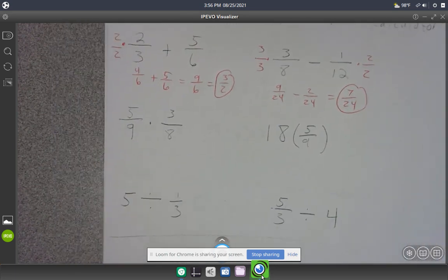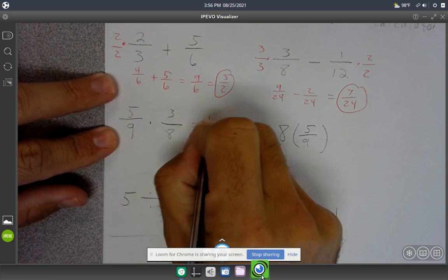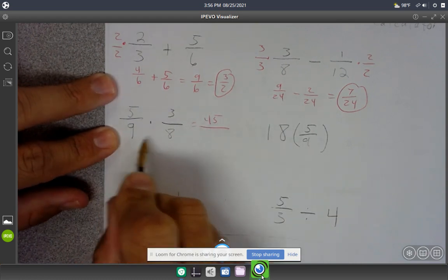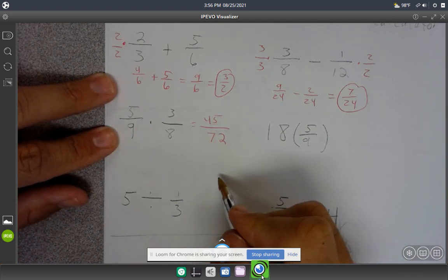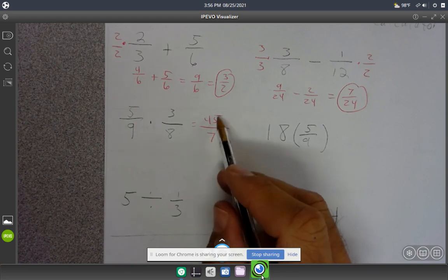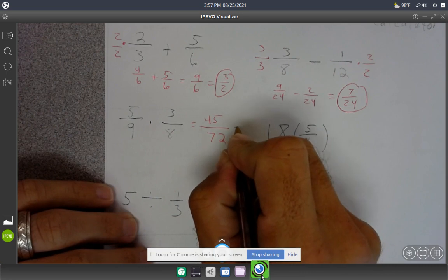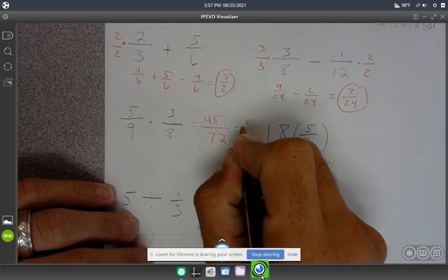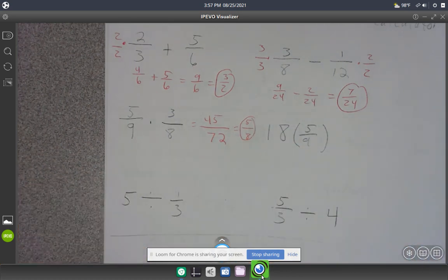For multiplying fractions, it's the easiest—just multiply straight across. 5 times 3 is 45, and 9 times 8 is 72. Then simplify: 9 goes into both, so dividing top and bottom by 9 gives 5/8.